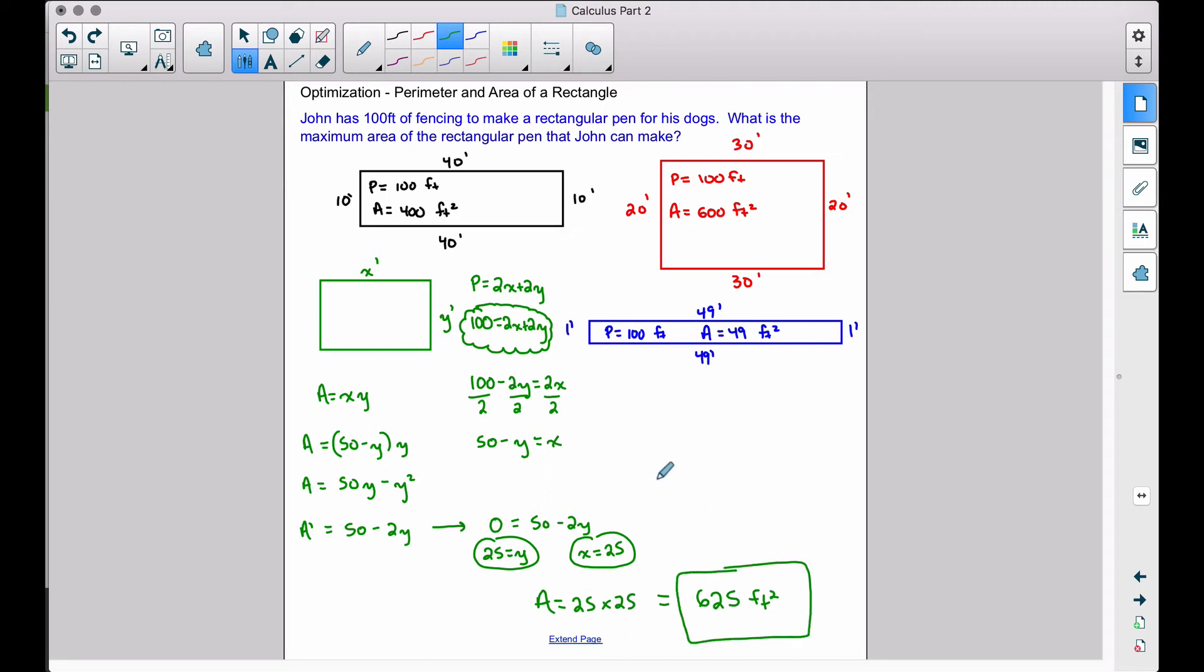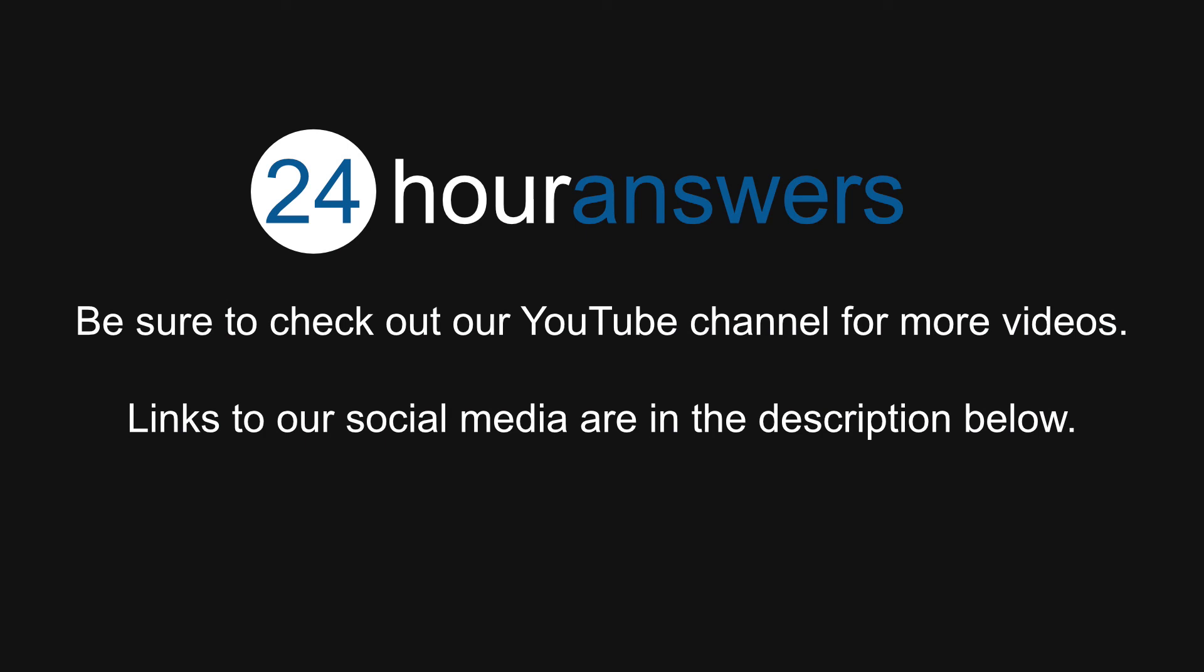Now, the next video that you'll see in this line of videos will be another problem dealing with a rectangle. But we're going to use maybe the side of a creek or the side of a barn or something for one of our sides of our rectangle. We're not going to be putting the fence there because we're going to be using something else for the side of that pen or that pasture or whatever it may be. These are classic calculus optimization problems. These are the introductory ones. They do get quite complex later on down the road, but we'll take it step by step in these next series of videos. And that's it for this video. I hope it helped. Be sure to check out our YouTube channel for more videos. Links to our social media are in the description below.